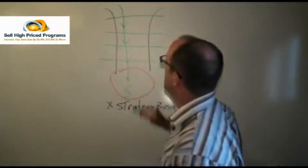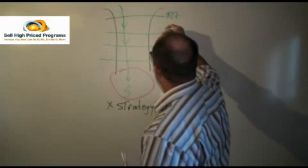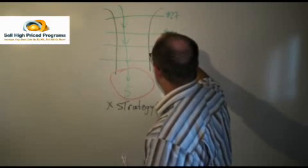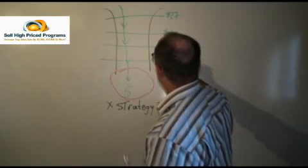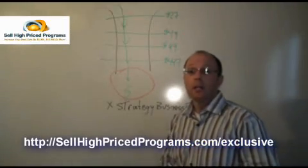And then from there, they come into higher-end programs and services. So they might start with a $27 product, go to a $49 product, $99 product, and a $497 product.